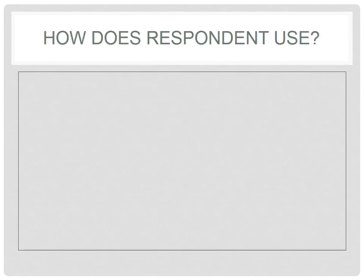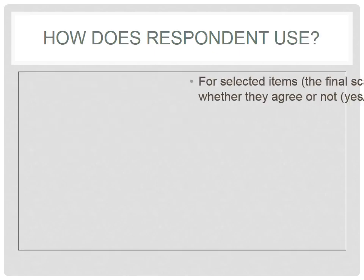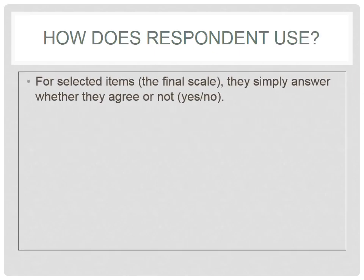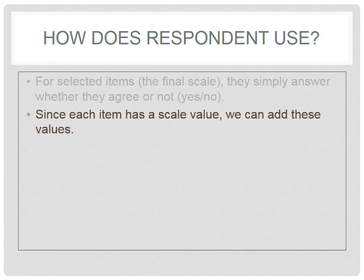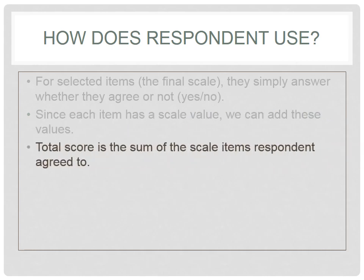What the respondent does, as you've already seen in the example, is give a yes or no answer for each item. Once we have the answers, we simply add these values up, and the total score is the sum of the scale items the respondent agreed to. That, in a nutshell, is Guttman scaling.